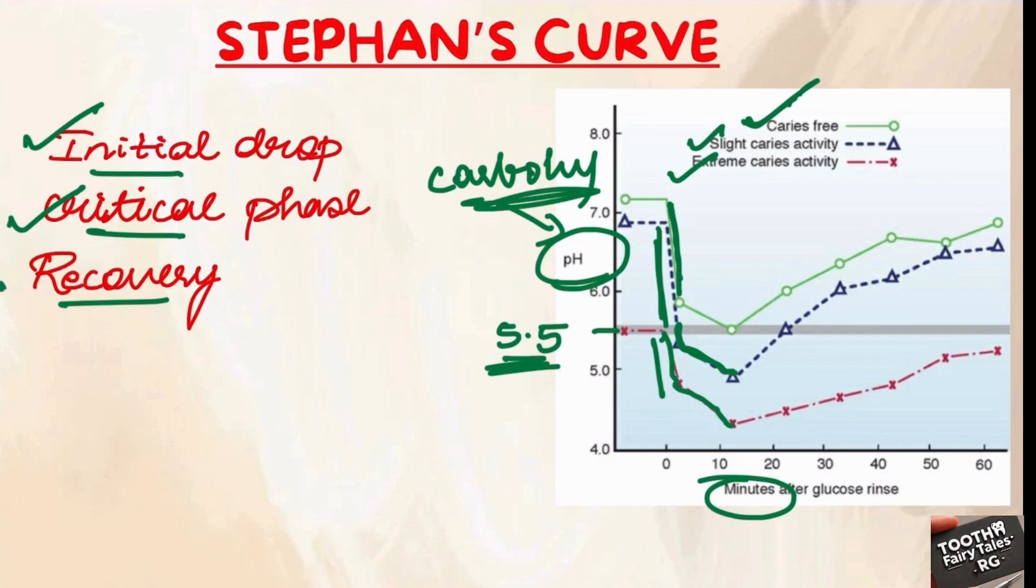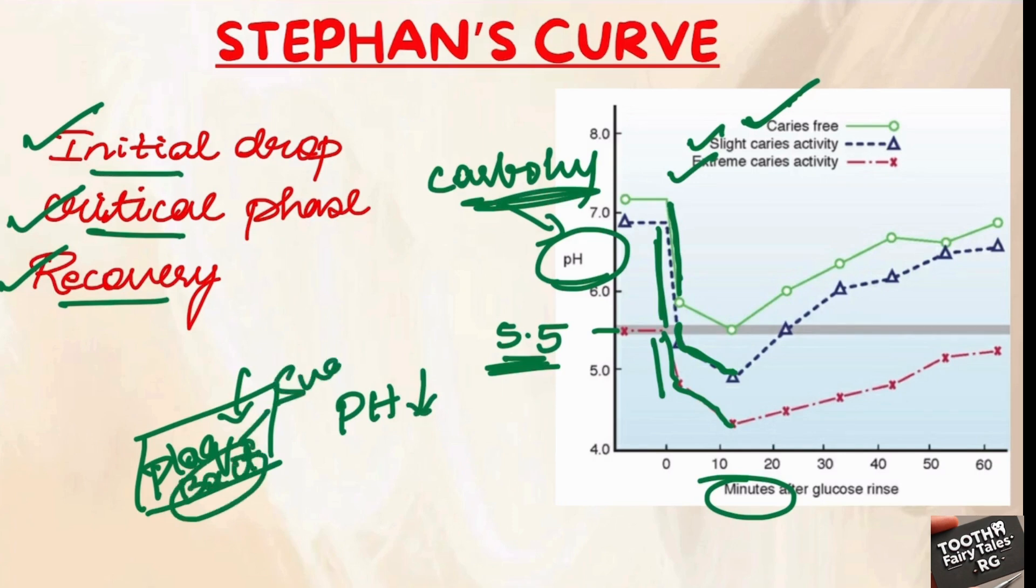And third is the recovery phase. As the sugars are used up, this is a plaque and after fermentation of the sugars, the pH is dropping down. The bacteria which are present in the plaque, after using up the sugars, the pH again starts to rise. It tries to get back to normal.